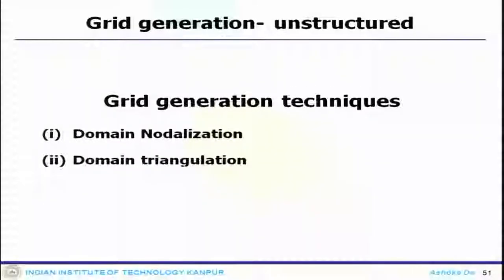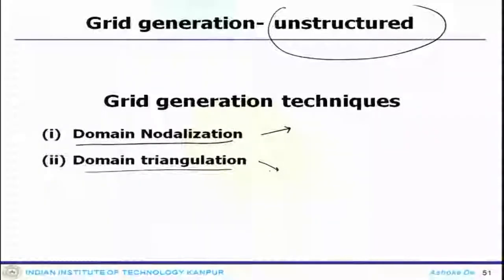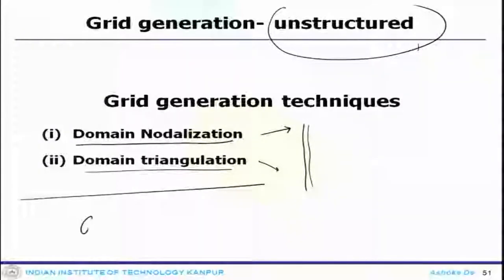The scenario changes when you go to unstructured grid. For unstructured grid, one very common approach is the domain nodalization approach — you pick a node, calculate the distance, and there is an algorithm associated with that. Or you can use a triangulation approach, generating triangular elements, looking at the area, and then generating the grid. Grid generation software for unstructured grids uses one of these algorithms. For further details, refer to any textbook dedicated to grid generation.